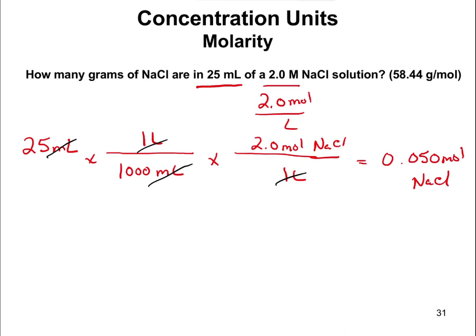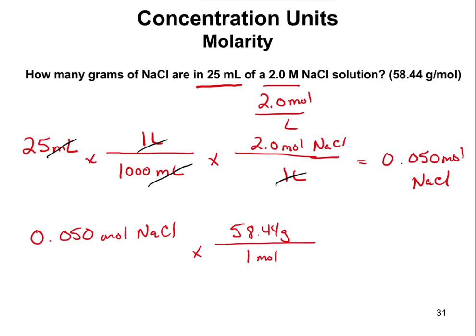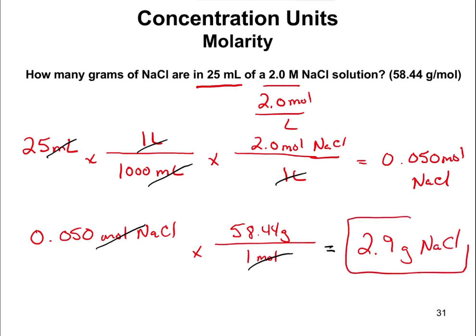You can't weigh out moles on a scale — you weigh grams. So we do one more conversion using the molar mass from Chapter 5: 0.050 moles of NaCl × (58.44 grams / 1 mole) = 2.9 grams of sodium chloride. Moles cancels with moles, and our final answer is 2.9 grams of NaCl.